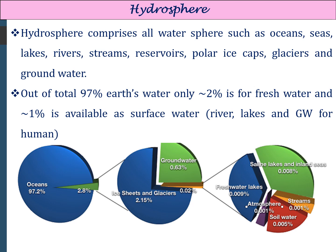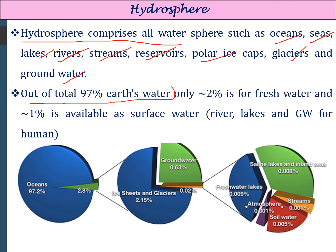The second sphere is the hydrosphere, which comprises all water bodies such as oceans, seas, lakes, rivers, streams, reservoirs, polar ice caps, glaciers, and groundwater. Out of the total water on earth, 97% is saltwater and only 2% is freshwater — a major concern for scientists today. Out of that 2%, only 1% is available for human use, in the form of surface water from rivers, lakes, or groundwater. From the figure, 97.2% of the hydrosphere is ocean, while 2.8% consists of ice sheets and groundwater, of which ice covers approximately 2.15%.